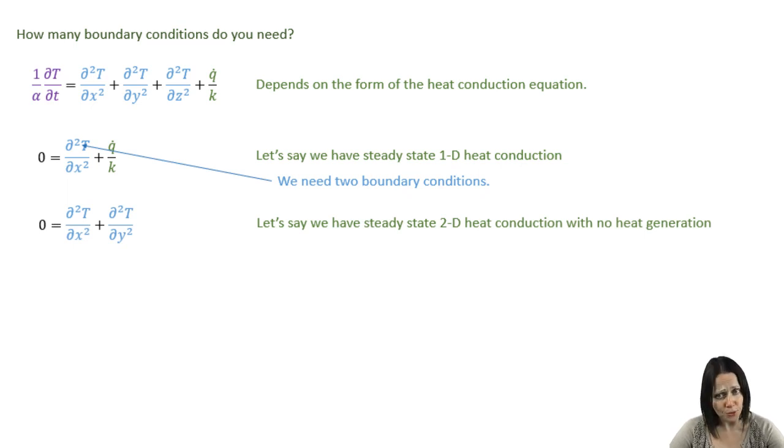So if you have 2D, two-dimensional, steady-state heat conduction, this time, say, with no heat generation, you're going to need four boundary conditions, two for each direction in which you have significant temperature gradient and thus a significant heat transfer.